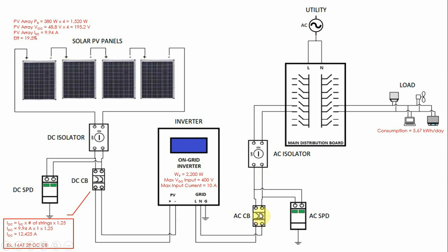Next we determine the AC circuit breaker at the output of our inverter. We calculate this by taking the maximum power rating of the inverter — 2,200 watts — and dividing by the grid voltage of 220 volts AC. Our minimum circuit breaker should be 10 amps. If a 10-amp circuit breaker is available, go ahead and use it, but for this example we choose the next available rating: a 12-ampere, 2-pole AC circuit breaker.